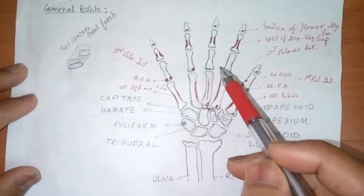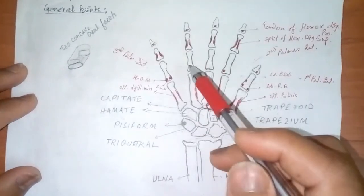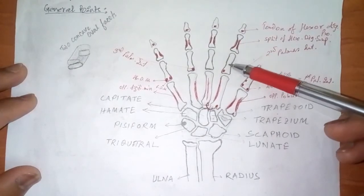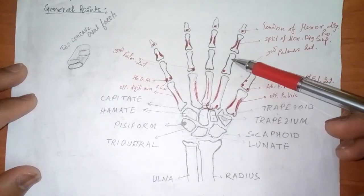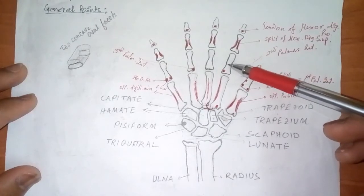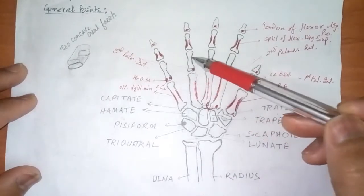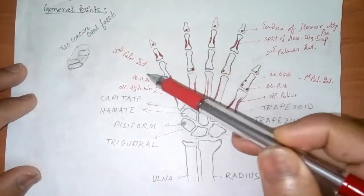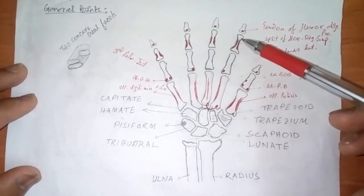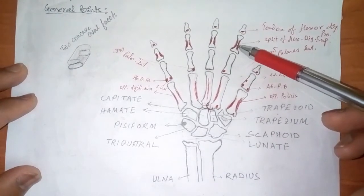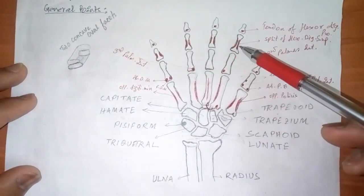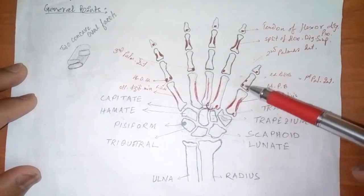Starting from the second digit up to the fifth digit, there are 3 phalanges, and these 3 phalanges are named according to their position. This phalange is the most proximal one, that is why it is called the proximal phalange. These 4 phalanges are called proximal phalanges, and this is also the proximal phalange for the thumb. So in total we have 5 proximal phalanges. The phalange in the middle position is called the middle phalange.